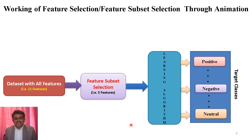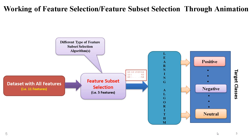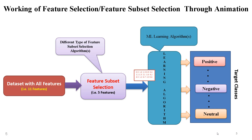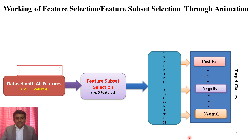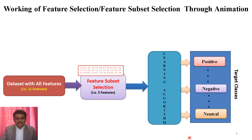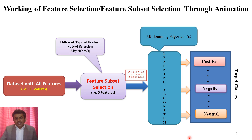This slide shows the working of feature selection and feature subset selection through animation. We start with a dataset of all features — the features may be huge in number; here the feature set has 11 features. We pass the original data to the feature selection method, which applies a technique to select a subset of features. In our scenario, we have selected the top 5 features, which are then passed to the learning algorithm, and based on those selected features, the algorithm makes its decision.